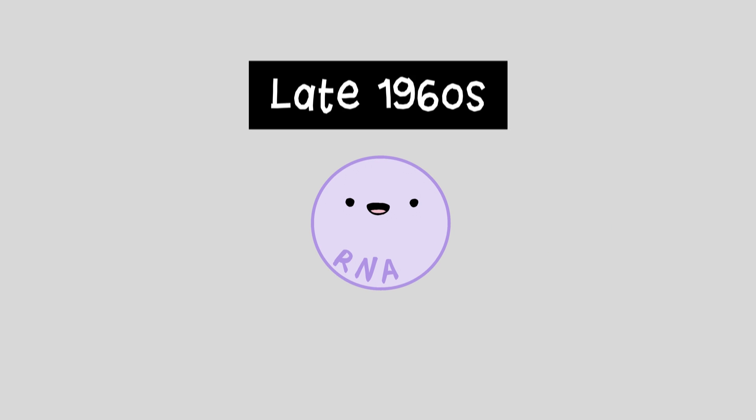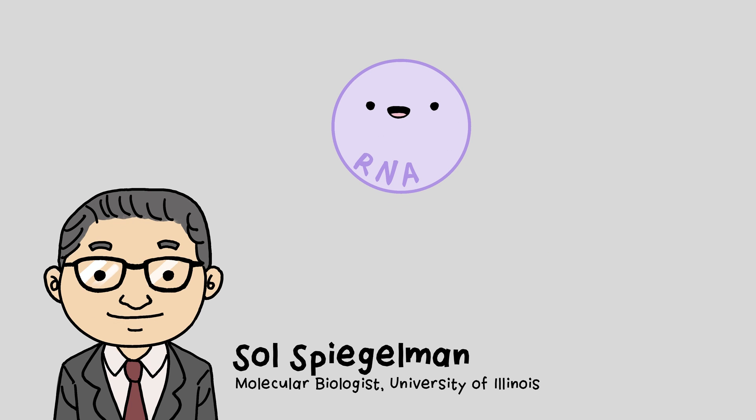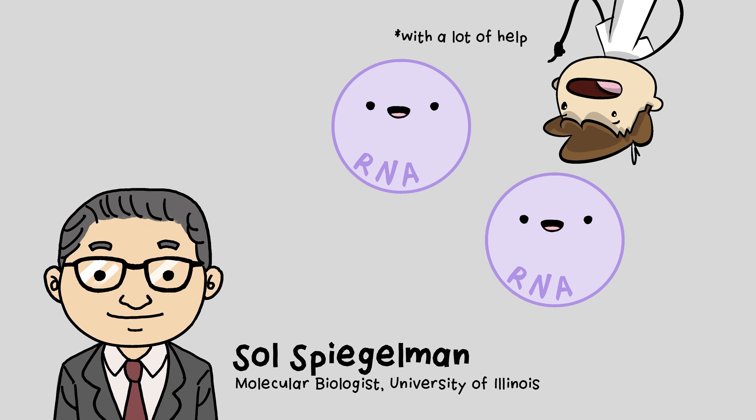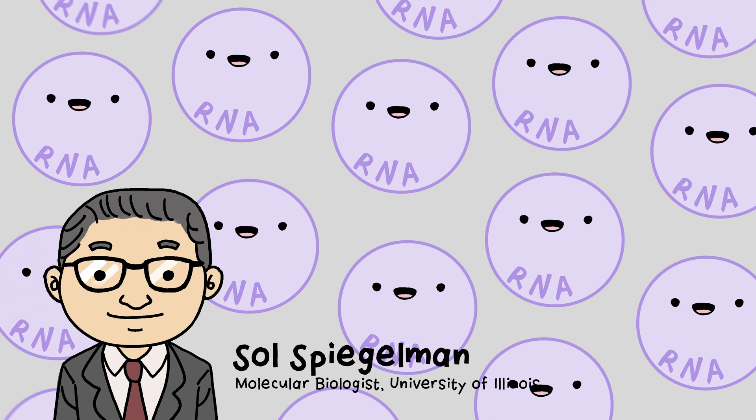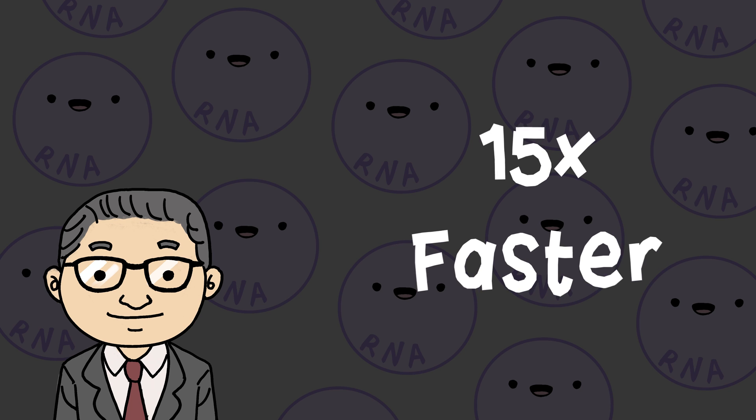A few years later, in the late 1960s, this other guy, Saul Spiegelman, demonstrated the powerful ability of RNA to self-replicate. With a lot of help. He tinkered with it for over 75 generations in the lab and produced a molecule that could be replicated 15 times faster than the original. Wow!